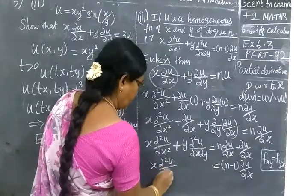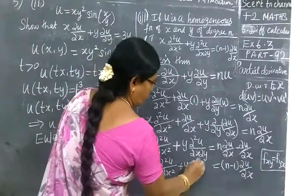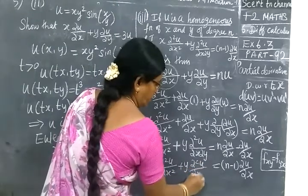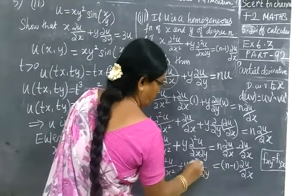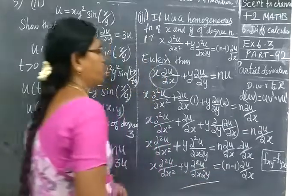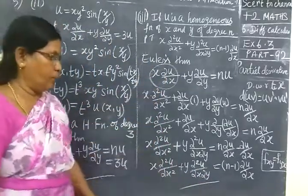Dou square u by dou x square by dou x dou y. It's very easy, isn't it? Thank you.